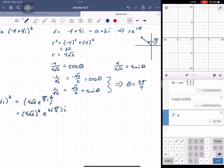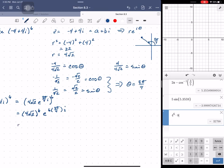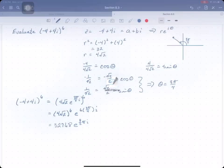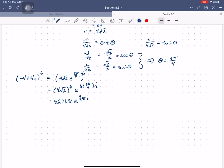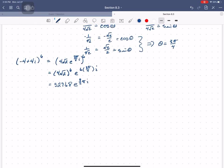So 32,768 times e to the ninth halfs pi i. Now I want to go back to standard form. Okay. So now what do I know? Well, I know that this means that r is 32,768 and theta is 9 pi over 2.